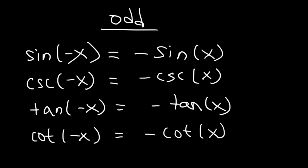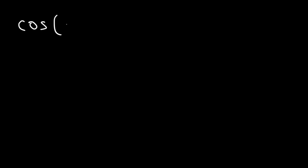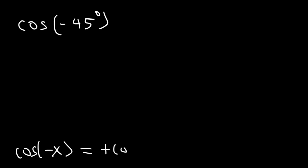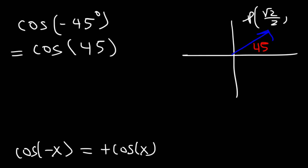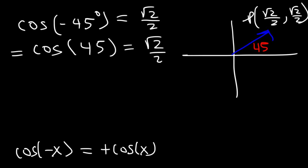So those are the even and odd trigonometric functions. Now how do we apply this information? If we want to find the value of cosine of negative 45 degrees, we know that cosine of negative x is simply cosine of positive x. So cosine of negative 45 is equivalent to cosine of 45. Using the unit circle, 45 degrees corresponds to the point (√2/2, √2/2), so cosine of 45 is √2/2. And cosine of negative 45 is the same thing: √2/2.